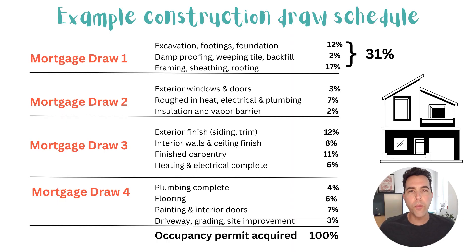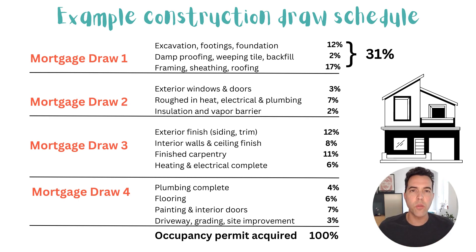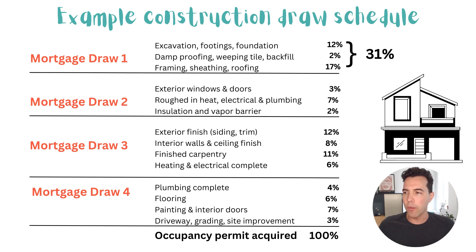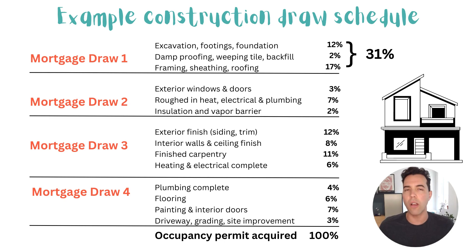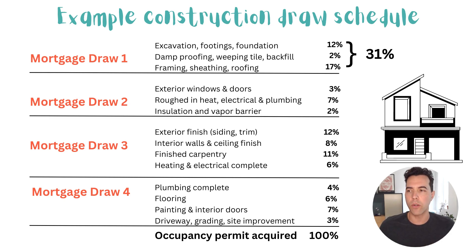Once you're approved for your construction loan, the construction mortgage lender will give you a draw schedule that looks a little bit something like this. This example shows four draws, which is commonly how it's done. However, you can have more or fewer draws depending on your needs, but the fundamentals remain the same regardless.